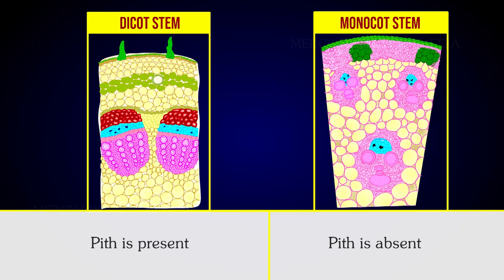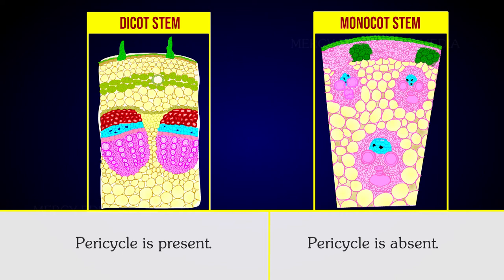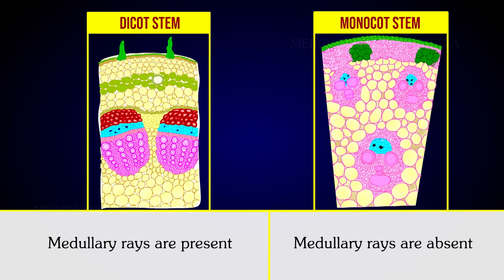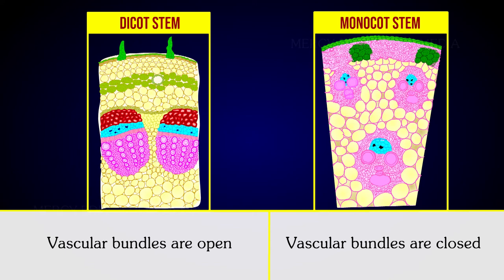The pericycle is present in dicot stems. Pericycle is absent in monocot stems. In dicot stems, medullary rays are present. In monocot stems, medullary rays are absent. The vascular bundles are open in dicot stems.